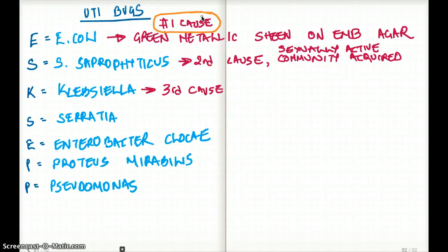What is the number two cause of UTI? That's going to be Staph saprophyticus. What's the third most common cause of UTI? That's going to be Klebsiella.